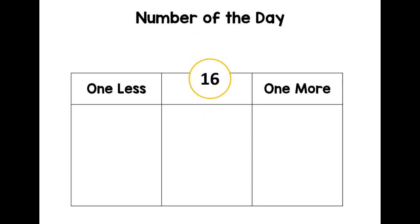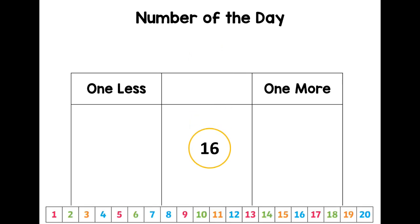Let's think about one more and one less. So our number of the day is sixteen and you can find it on the number track, remember. And then think about where you need to jump for one less and where you need to jump for one more. So there's sixteen. Let's make it disappear.